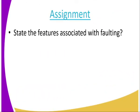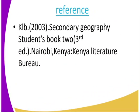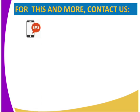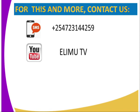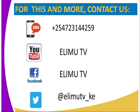The activity for today: state the features associated with faulting. For more information, you can visit the KLB 2003 secondary geography student book, third edition. You can also find us through YouTube, Facebook, and Twitter. Stay tuned to Arim TV. Thank you.